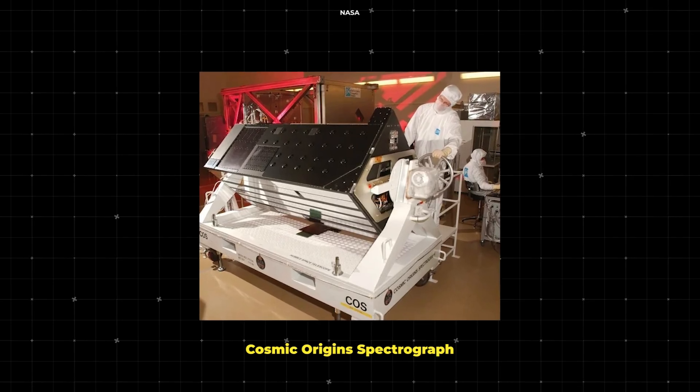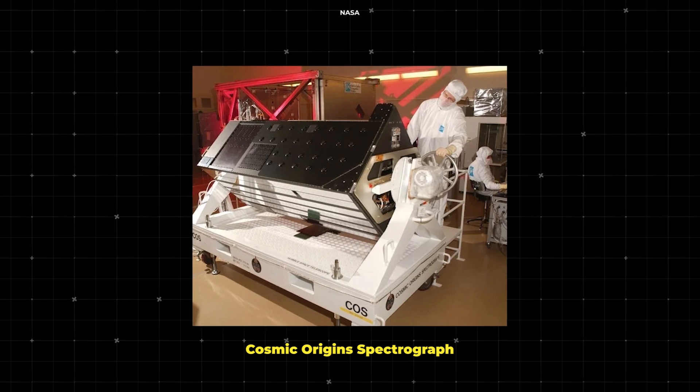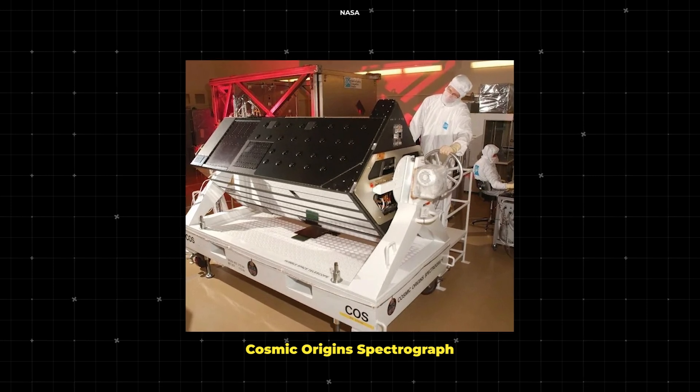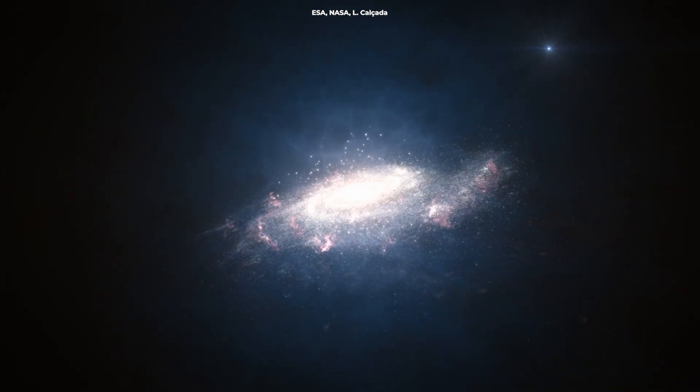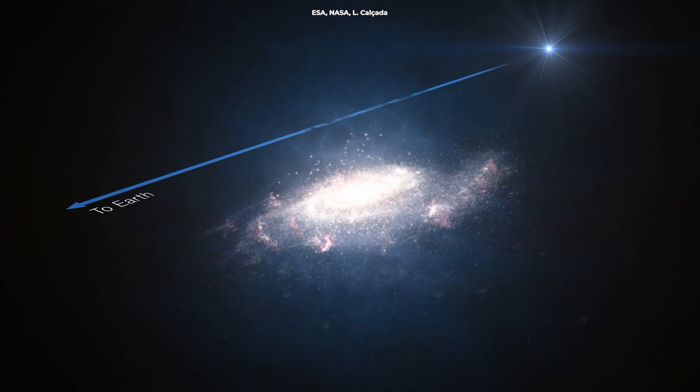Using Hubble's cosmic origin spectrograph, they broke down the quasar's light into its component colors. When light passes through the LMC's gas, it leaves behind a unique fingerprint, telling us exactly what that gas is made of.